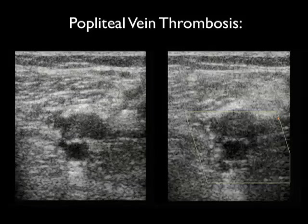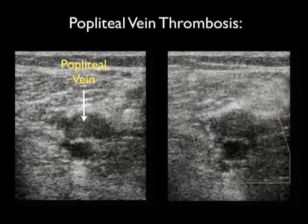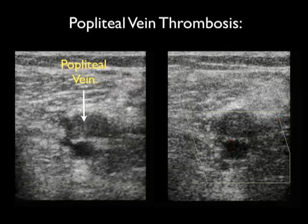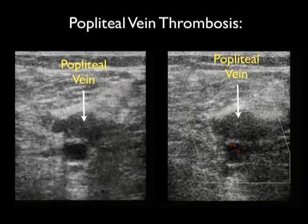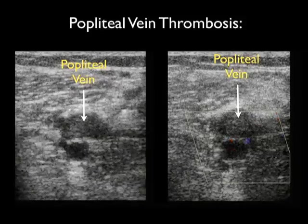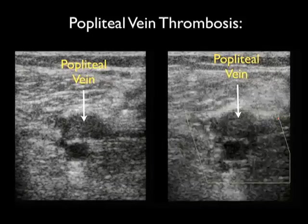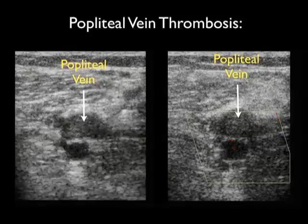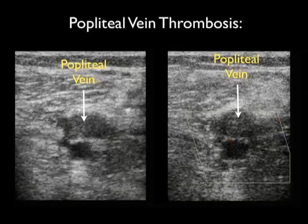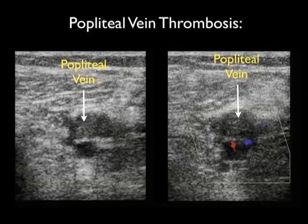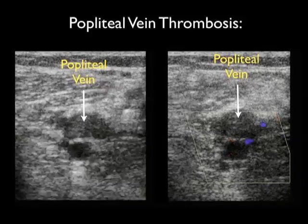Now let's move down the leg and look specifically at the popliteal vein. Here are two video clips — towards the left, a B-mode or grayscale sonography image, and towards the right, color flow Doppler. We identify the popliteal vein towards the top of the image, effectively posterior to the popliteal artery. We can identify the color flow flashes and pulsations of the popliteal artery seen deep to the image. Notice the echogenic swirls of clot within the popliteal vein, and on the left we're compressing down — the popliteal vein fails to compress secondary to the DVT.